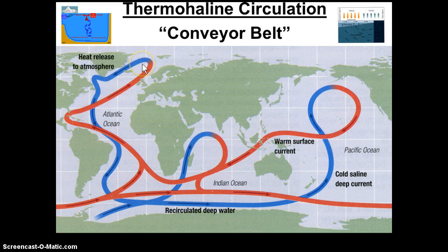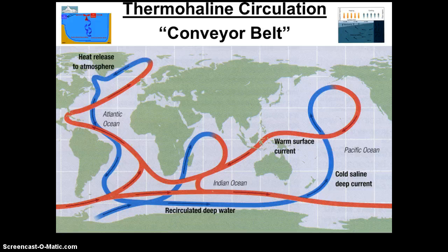So transfer of cold water, deep cold water towards the equator in the deep, transfer of warm fresh water at the surface towards the poles. Thermohaline circulation, and that's what balances the majority of the global heat budget.